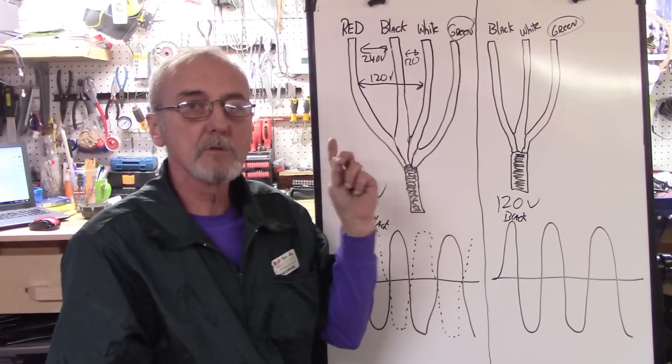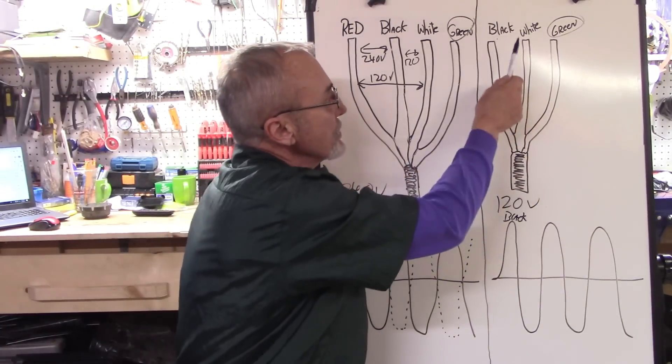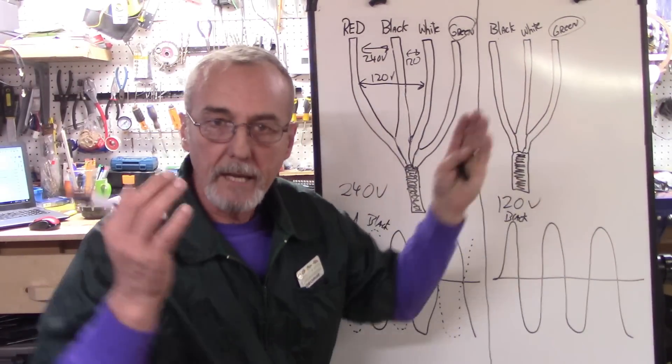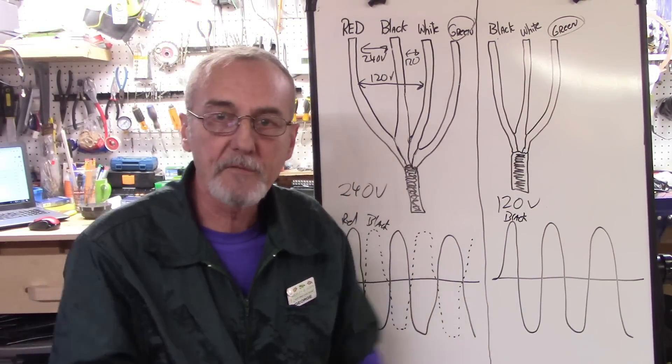Now, for most of our 120 volt appliances or devices, you'll use the black and the white. That gives you 120 volts, and the ground. That's for safety.